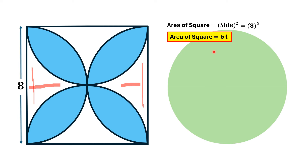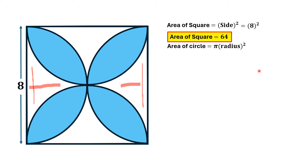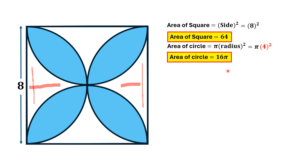This circle has diameter eight units and therefore radius four units. The area of these two semicircles is equal to the area of that circle, which is pi times radius squared. With radius equal to four units, the area of the two semicircles equals 16π.